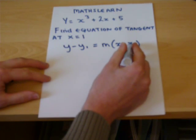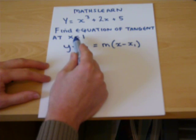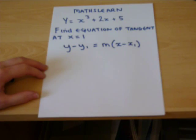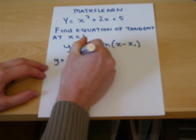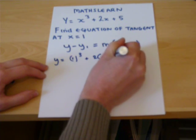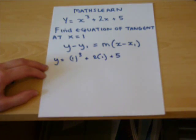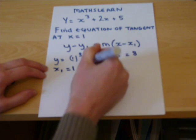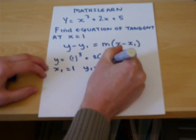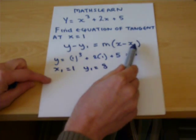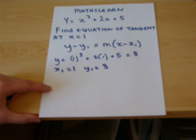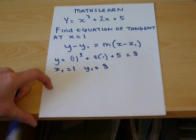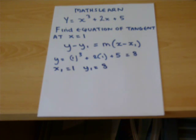We already know x1 — we know the tangent passes through at x equals 1, so we can also find y1. When x equals 1, y equals 1 cubed plus 2 times 1 plus 5, which is 1 plus 2 plus 5, equals 8. So we know that x1 equals 1 and y1 equals 8. The 1 here and the 1 here are not linked — this is just a particular coordinate, which happens to be x equals 1 and y equals 8. However, we're still missing the gradient of the line.